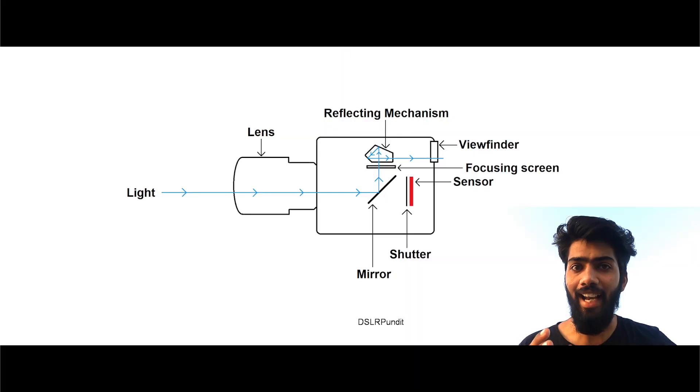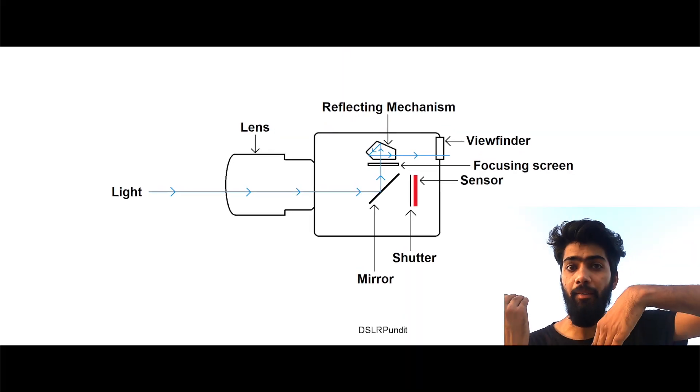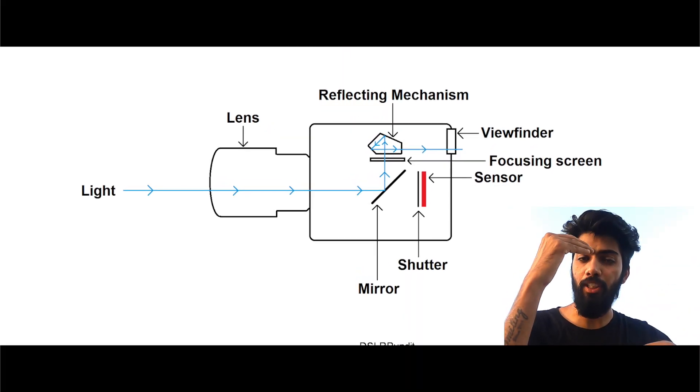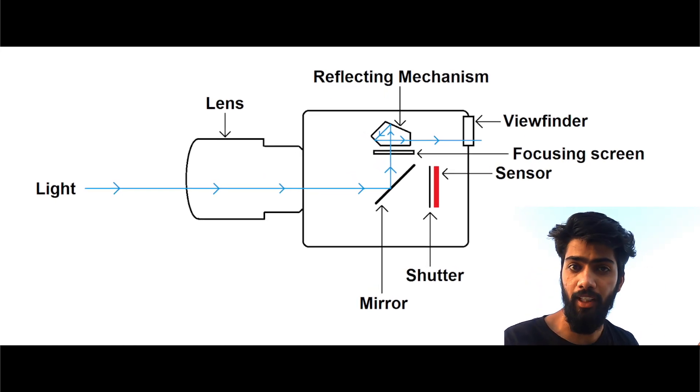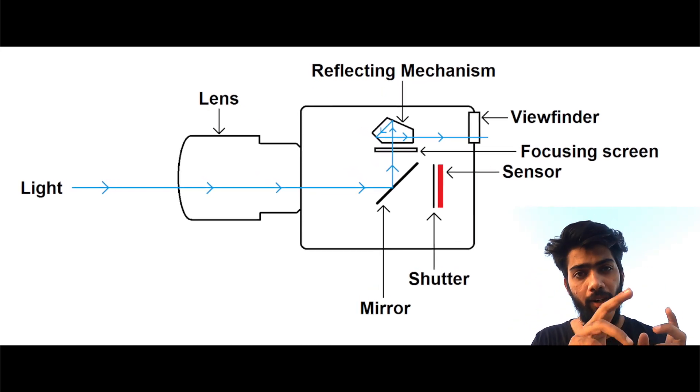After the lens, light comes to the mirror inside the camera. I'll talk about DSLR first and then mirrorless. In a DSLR, there are two options — either two mirrors, or one mirror and one prism, which is called the penta prism. After entering through the lens, light hits the mirror, then goes to the prism, and then reaches the viewfinder.